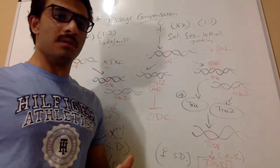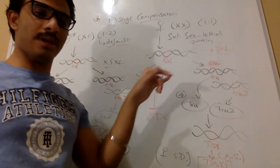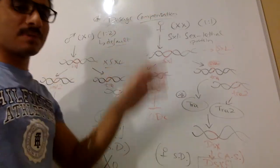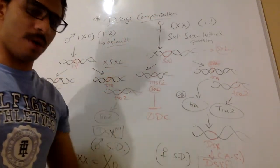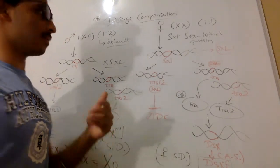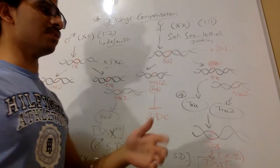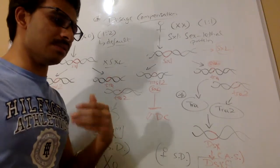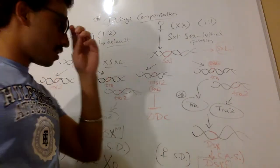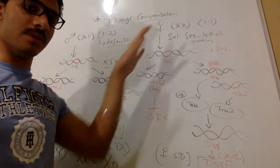Let's talk about the idea of dosage compensation in Drosophila. Dosage compensation is a really important phenomenon that happens in many species — it happens in humans, it happens in Drosophila, it happens in nematodes like C. elegans. But we're going to stick to Drosophila in this video.